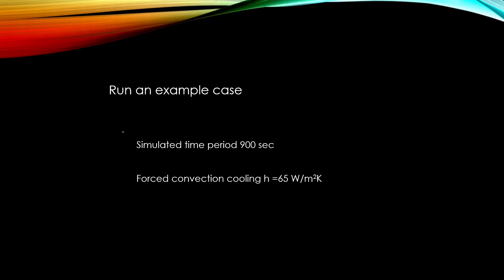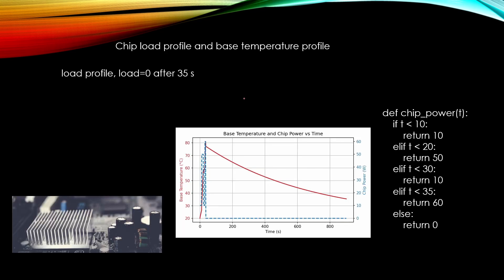Here are the results from an example case. I simulated 900 seconds. And in this first simulation I used forced convection cooling, having this H value 65 watts per square meter Kelvin. In this picture you see the load profile. At the beginning it is 10 watts, then increasing to 50 watts, and coming down to 10 watts. And after that there is a short 5 second peak having load 60 watts. And this red curve is telling the base material temperature.